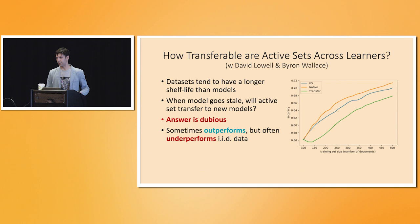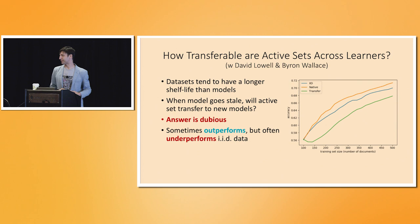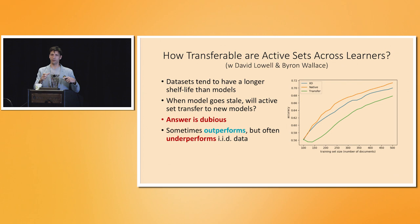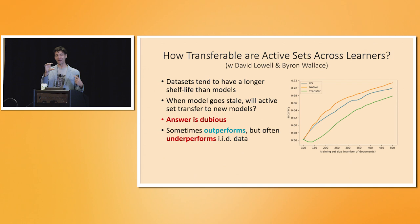When you switch models, do you train that new model on the same data collected through active learning? It's worth noting: uncertainty sampling heuristics are based on the properties of the model you are training. The examples you selected were based on that particular architecture's uncertainty estimates. If you switch to a different architecture, the data you collected may no longer be the most informative subset for that new model — raising the question of whether actively queried data transfers well across model changes.